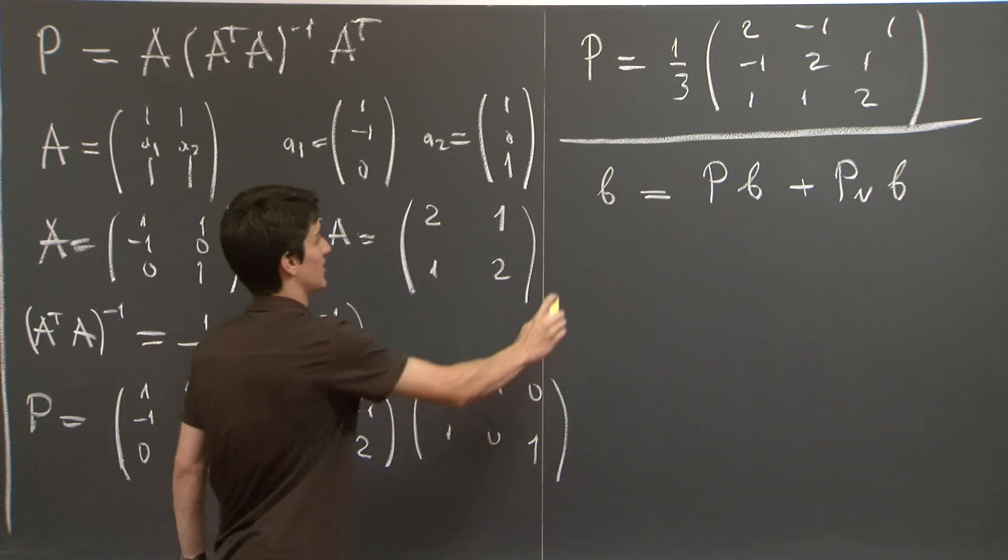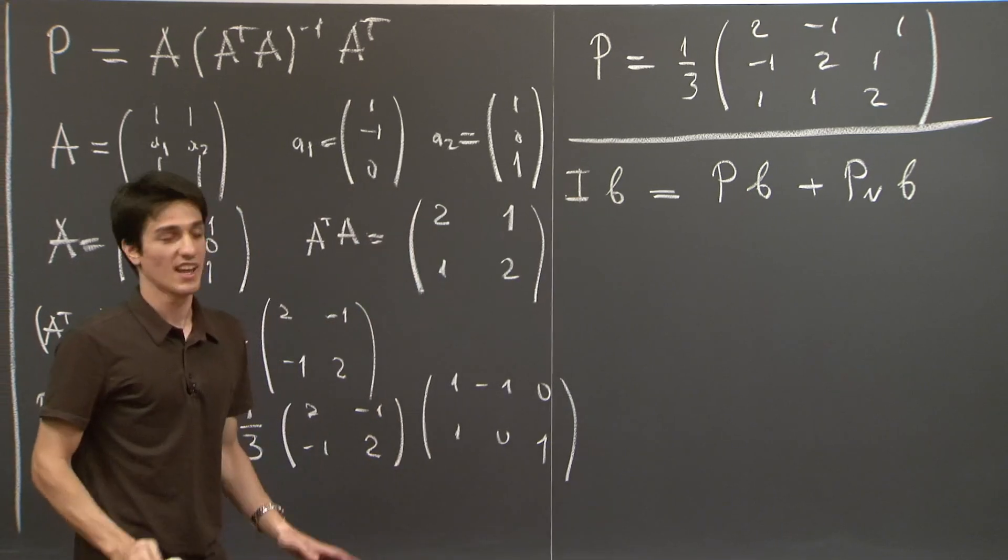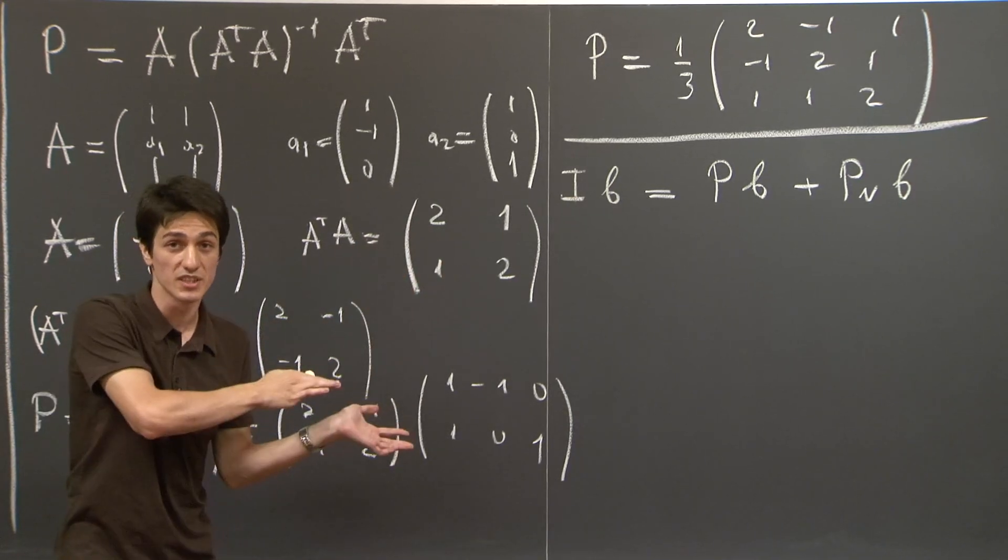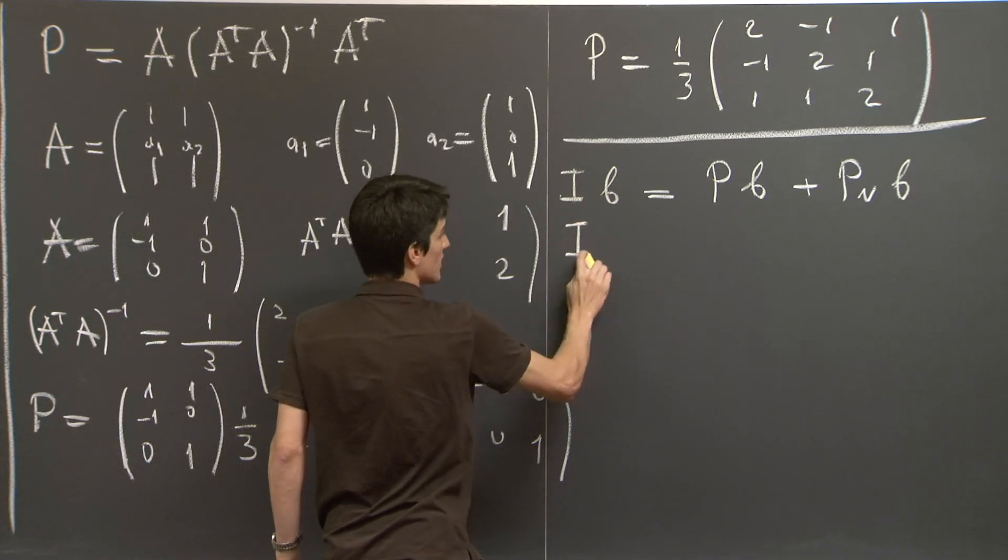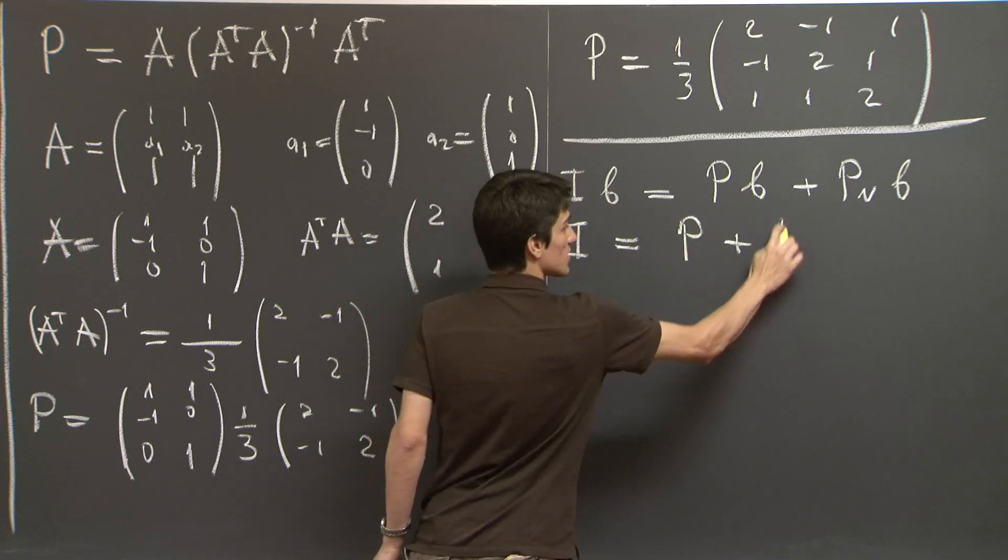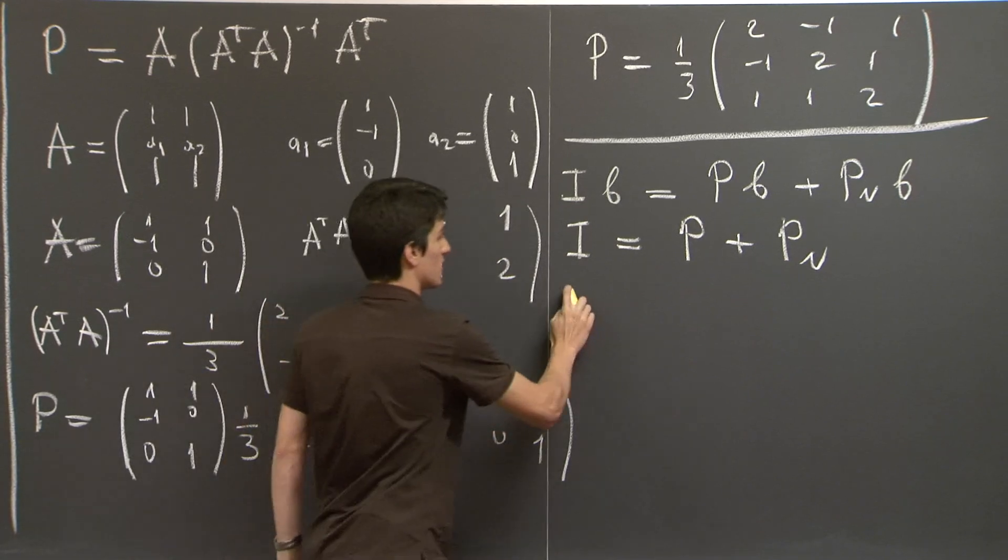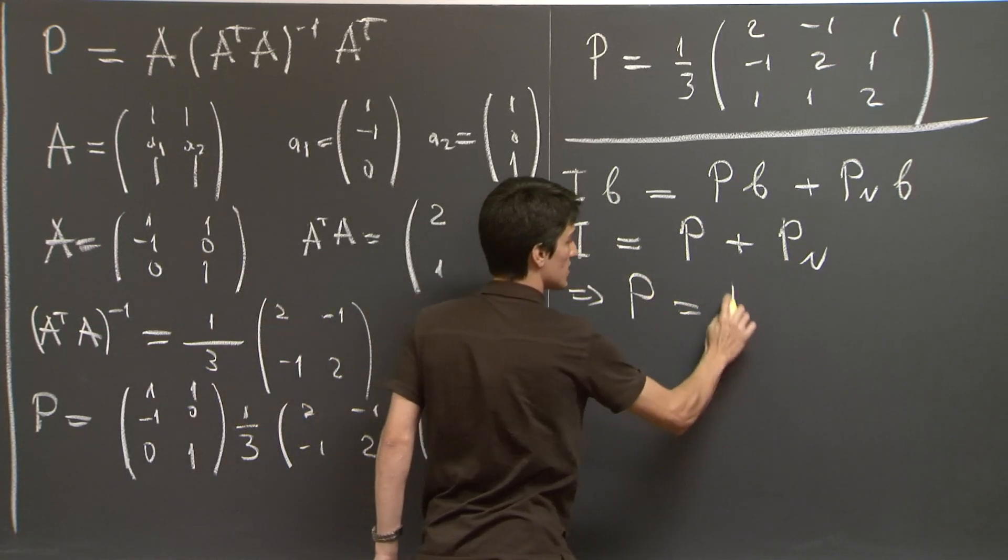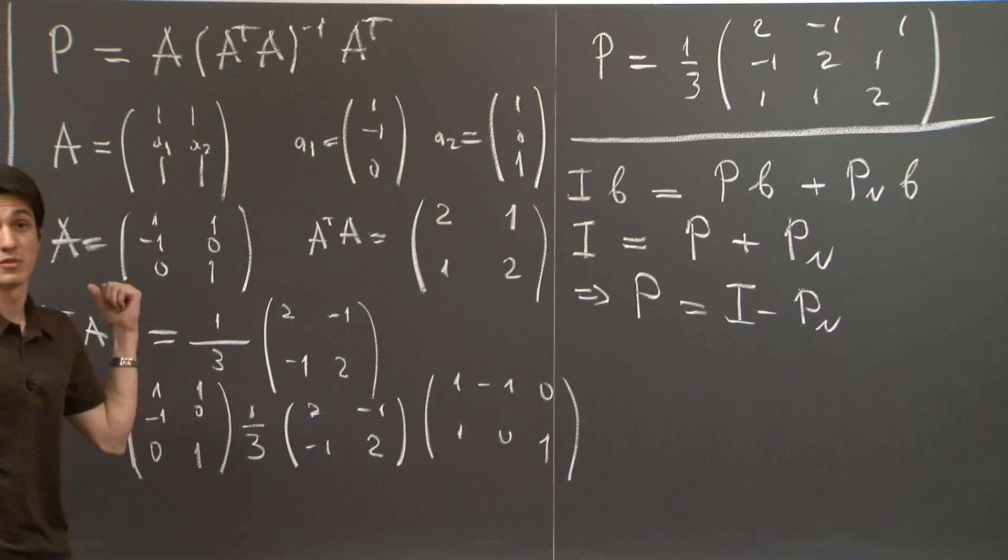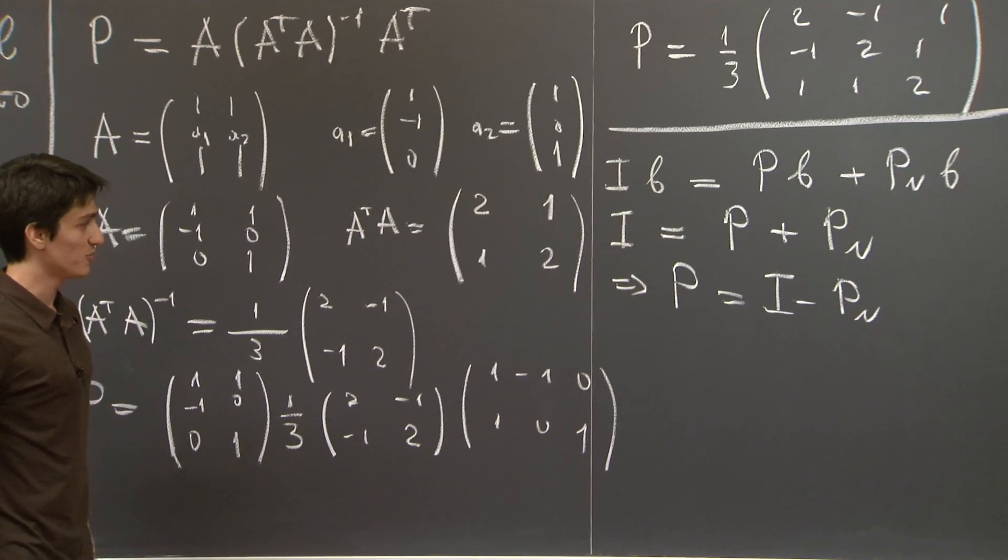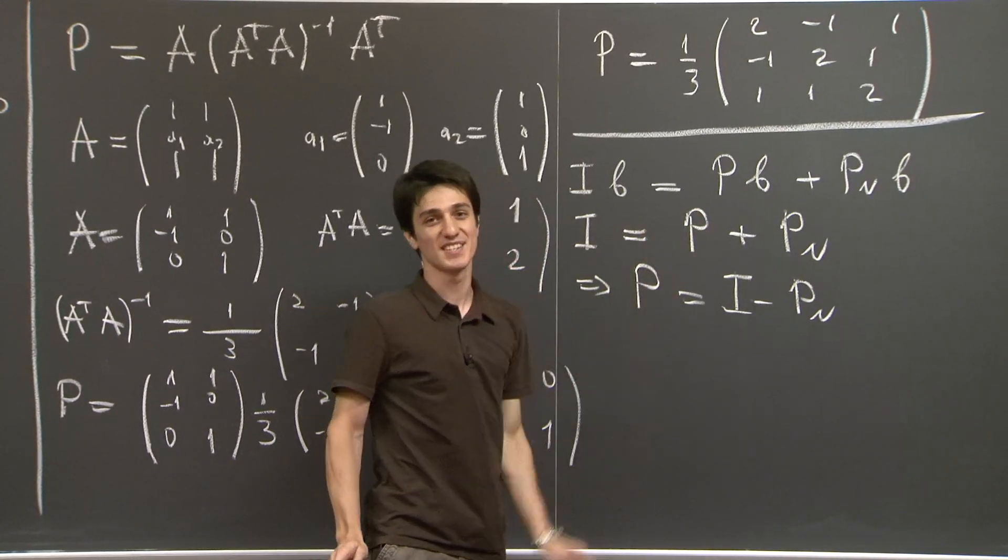OK, I'm going to suggestively write here the identity matrix. So that you can immediately read off a matrix equality associated with this. Equality here, it's the identity equals P plus PN. And therefore, the projection matrix is just the identity minus the projection matrix onto the normal vector.